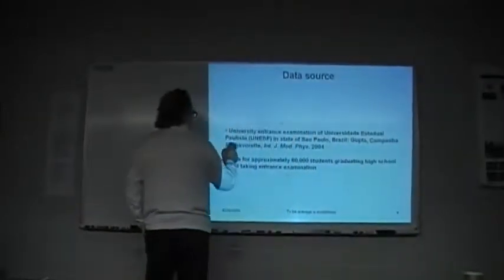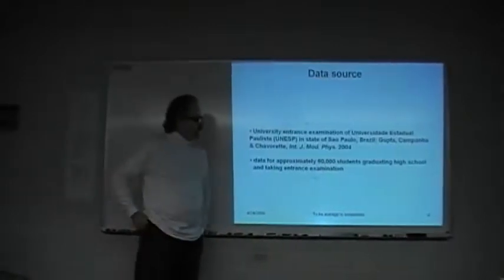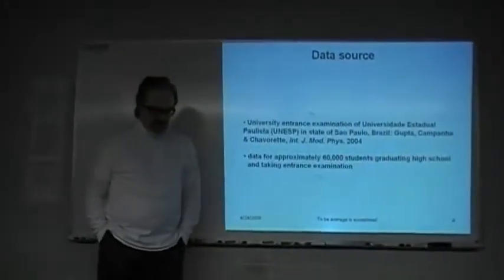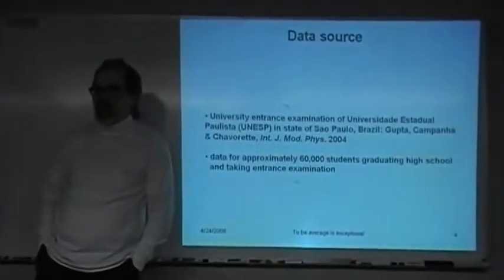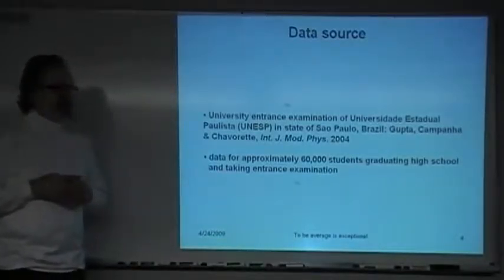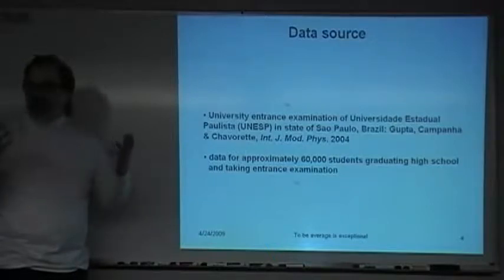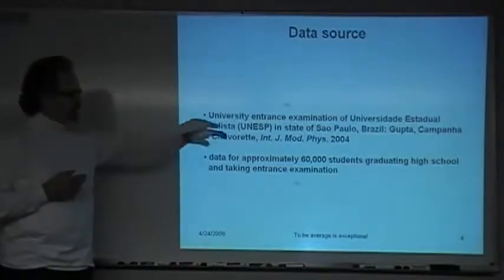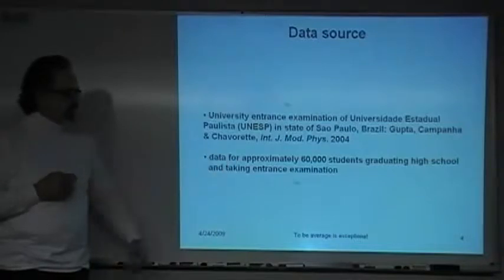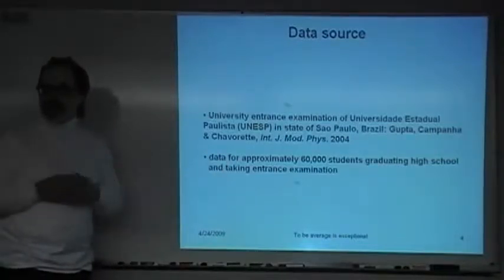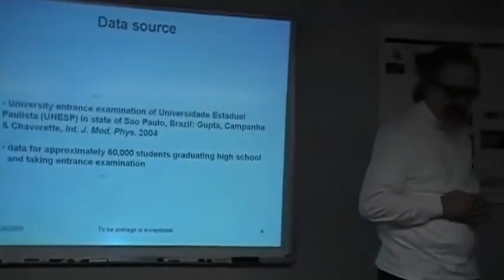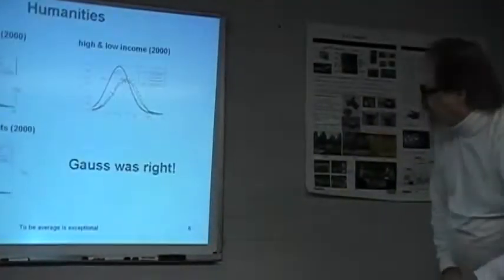And a couple of years ago, I ran across this paper. And what these guys did is they looked at essentially a college entrance exam for how well you've done in different disciplines in high school. So, it's like an achievement test. And it's in the social sciences, physics, biology. And this entrance exam covers all the disciplines. And it's for approximately 60,000 students. And so, you can look at the distribution of grades. It's the first data source I've seen for this distribution of grades.